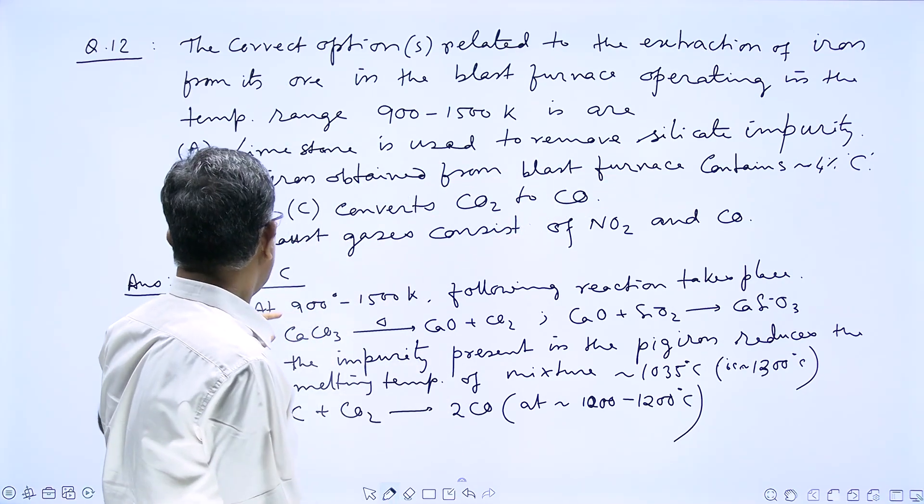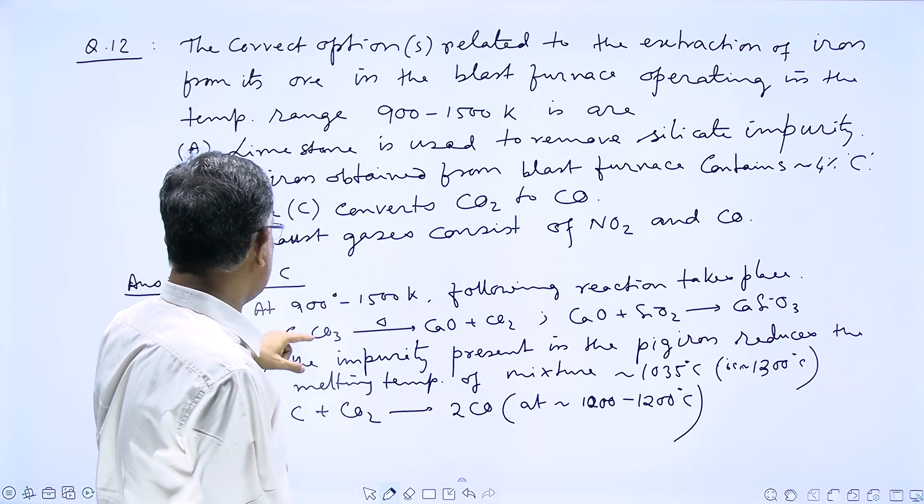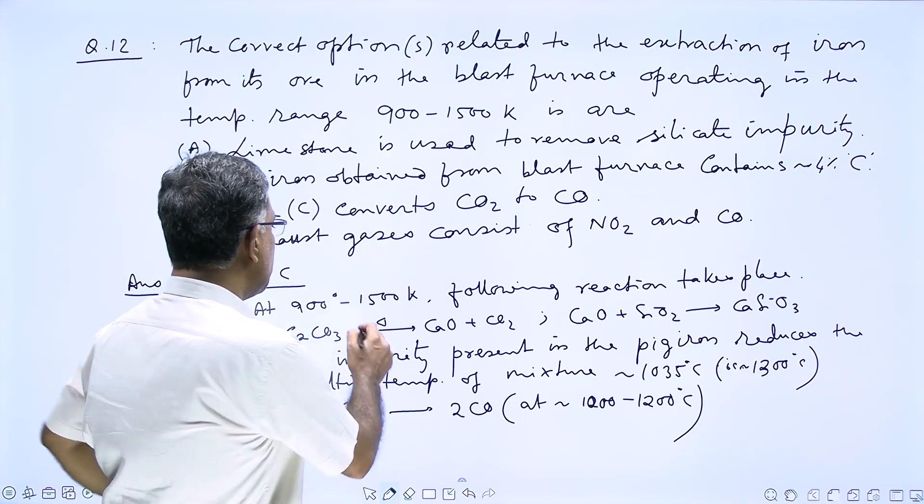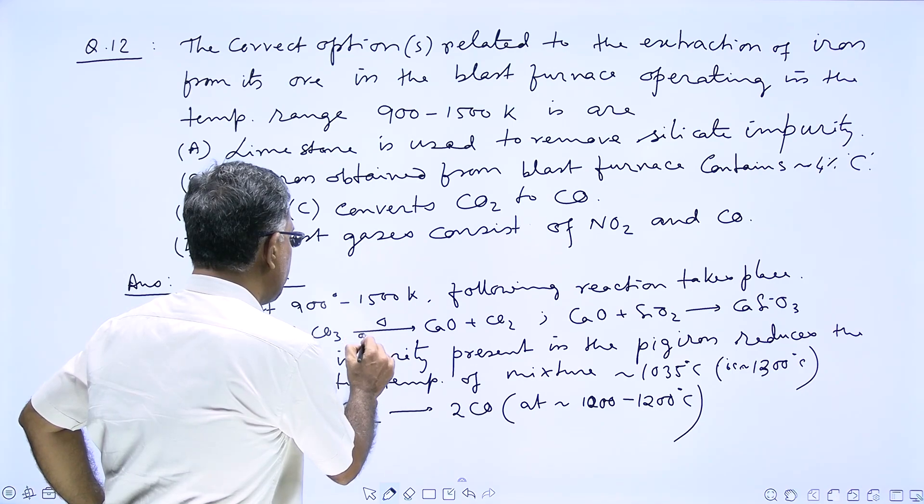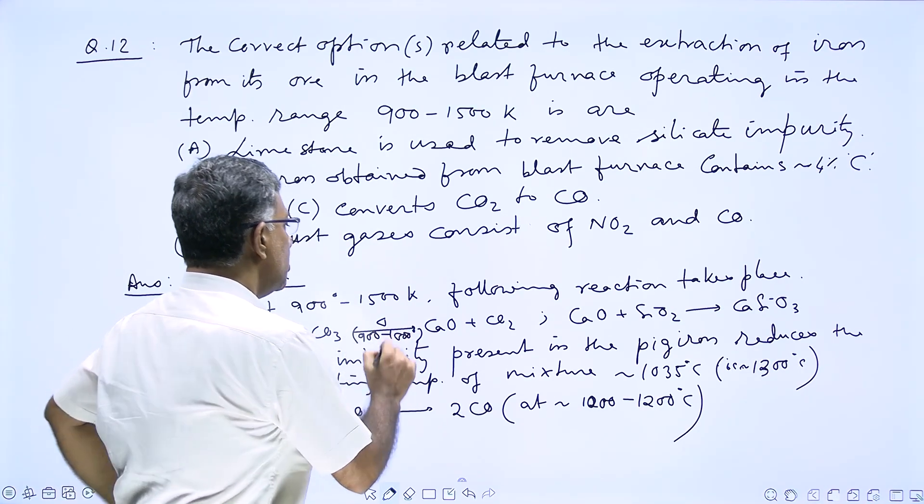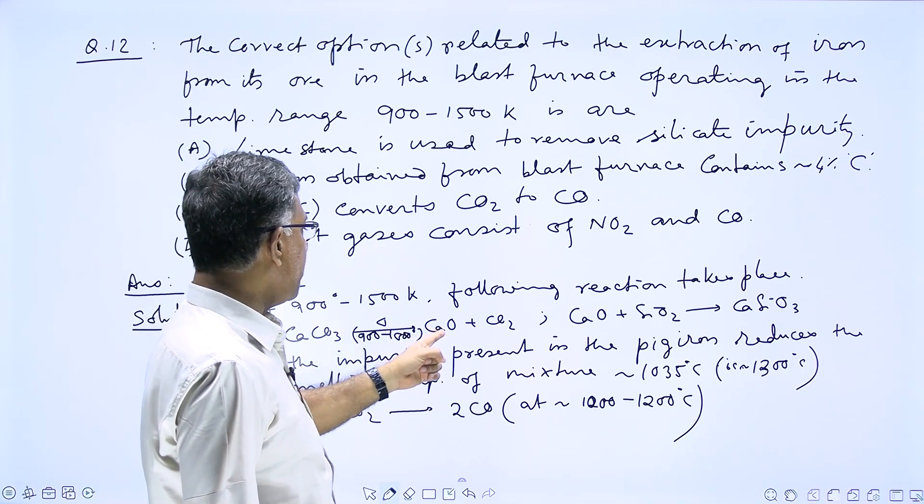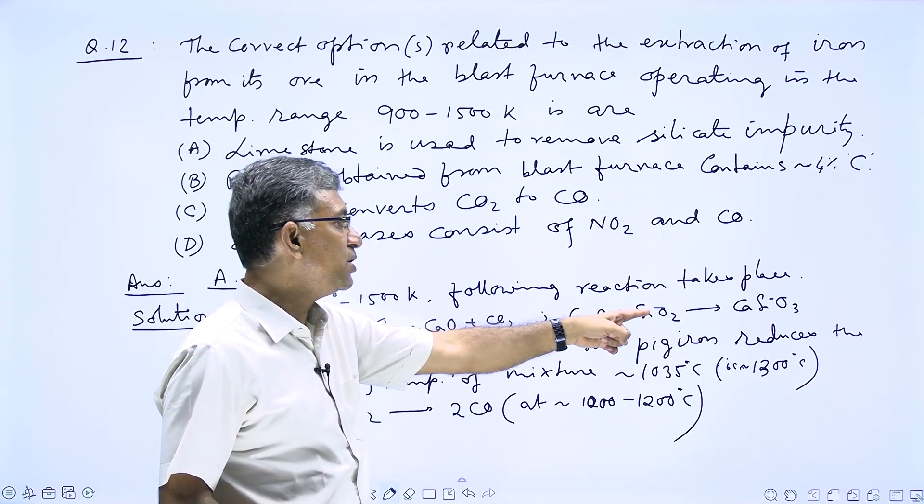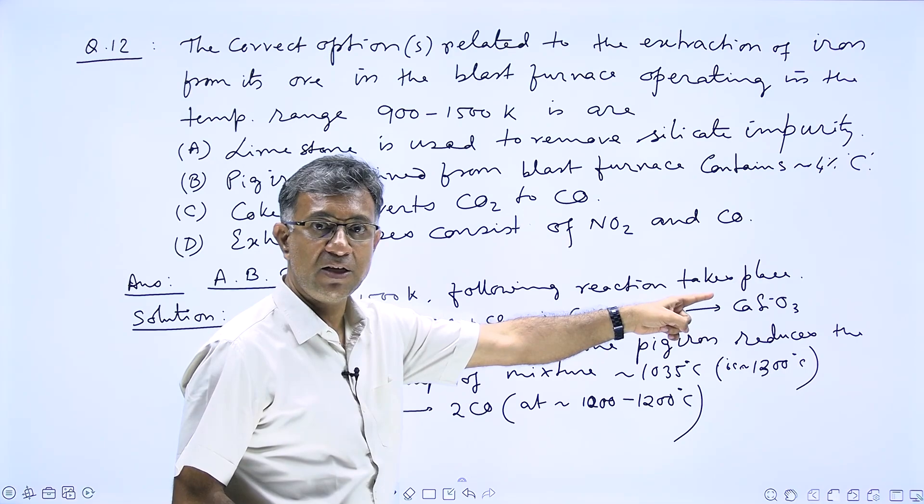This is the answer here because according to the fact, CaCO3 undergoes decomposition approximately around the temperature of 900 to 1000 degrees centigrade. So it initially forms CaO, and CaO reacts with SiO2 to give you the slag CaSiO3.